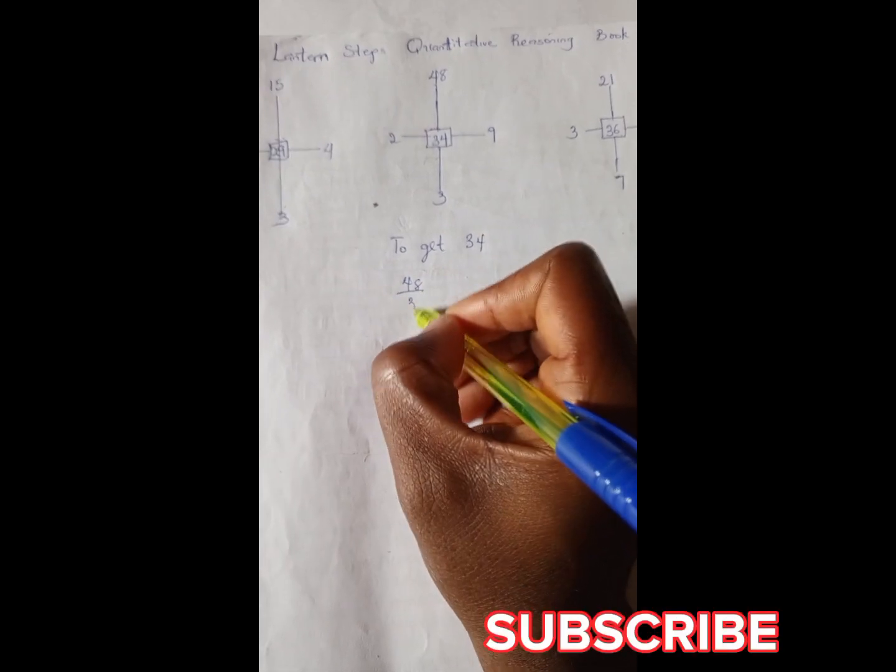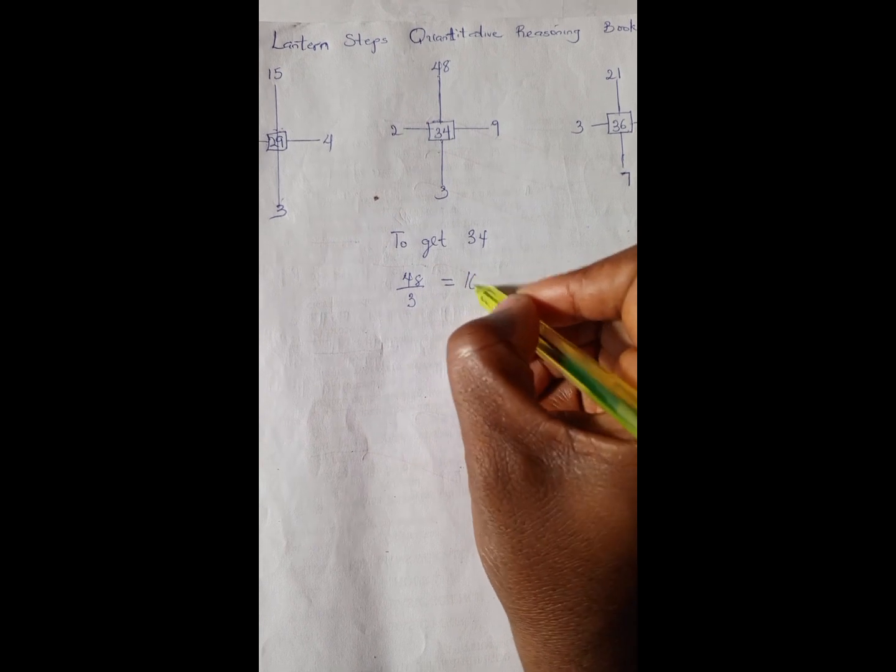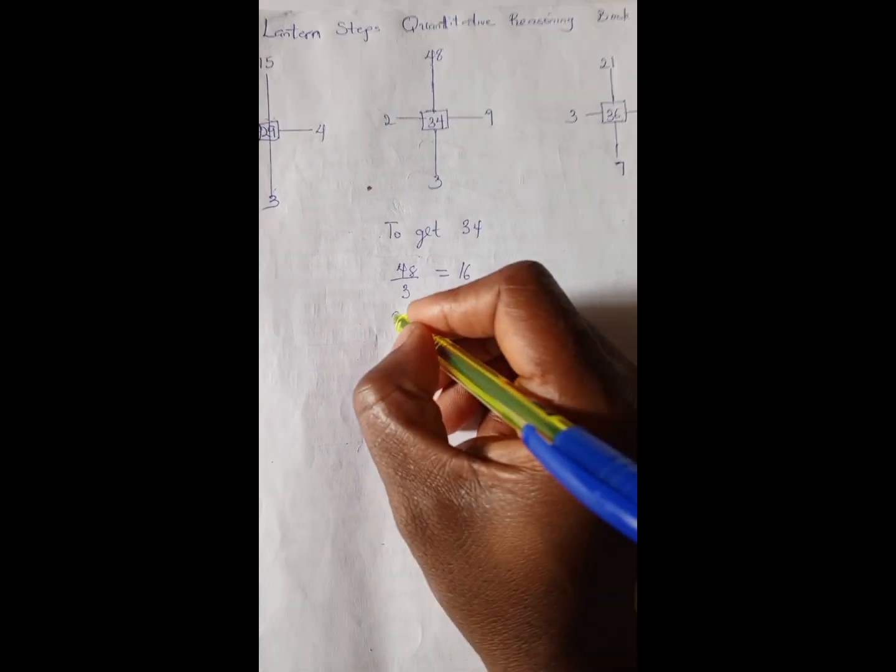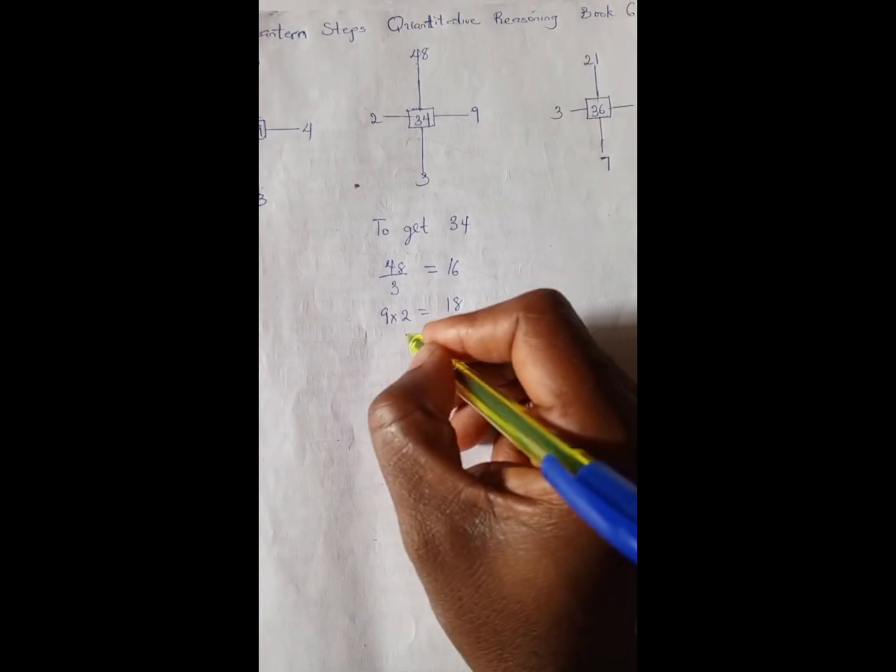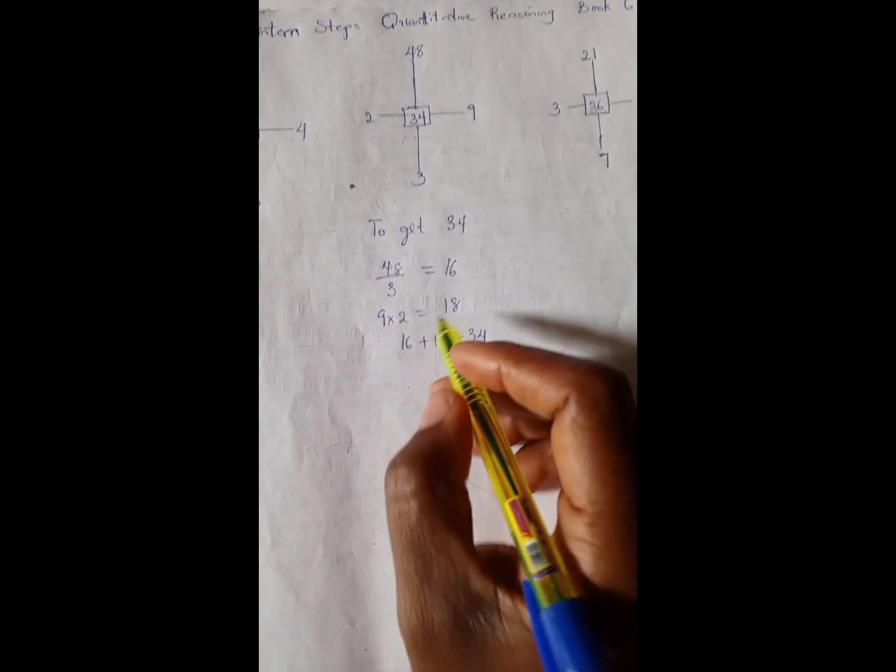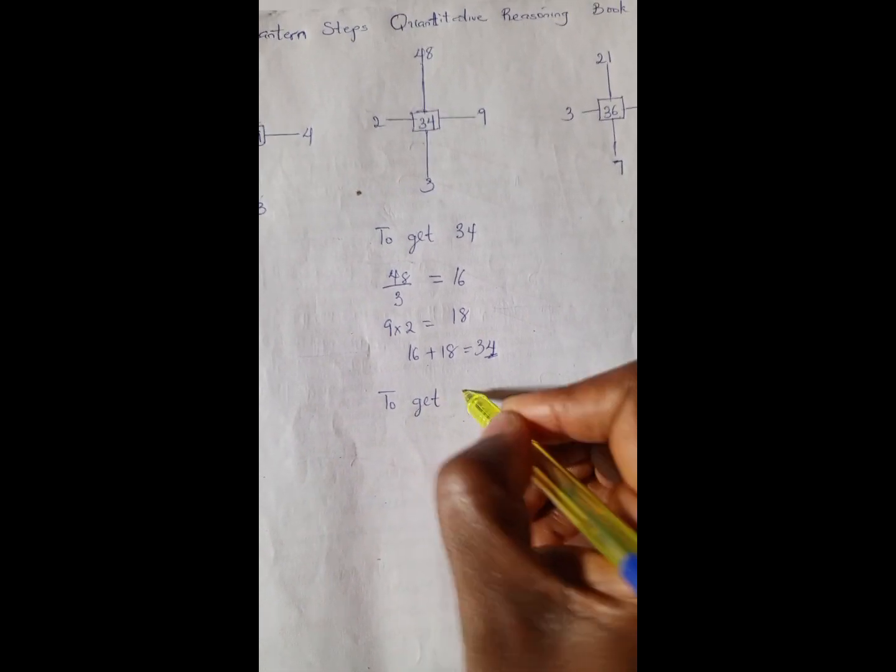have 48 divided by 3, and 48 divided by 3 is 16. Then 9 times 2 is 18. So 16 plus 18 is 34. So that's for that. So let's try to get 9.